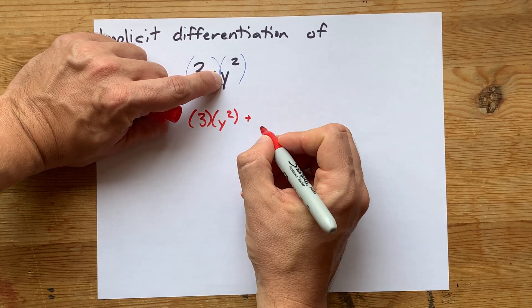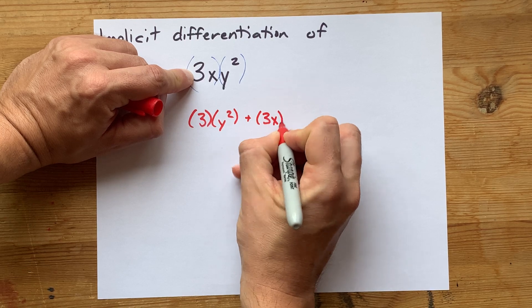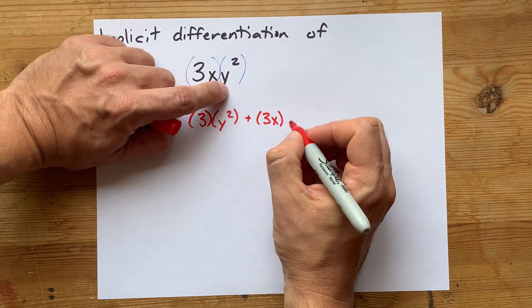Added to, and then you keep the first thing as is, times the derivative of the second thing.